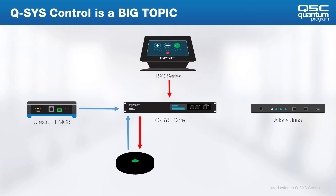QSYS can also receive incoming control from third-party control systems such as Crestron, AMX, Extron, and other devices that can be a part of the design. And finally, we have outgoing controls from QSYS to other devices. Once our system receives control signals from these methods, then we can have programming comprised of simple control components, plugins, or scripts to provide the functionality we need.